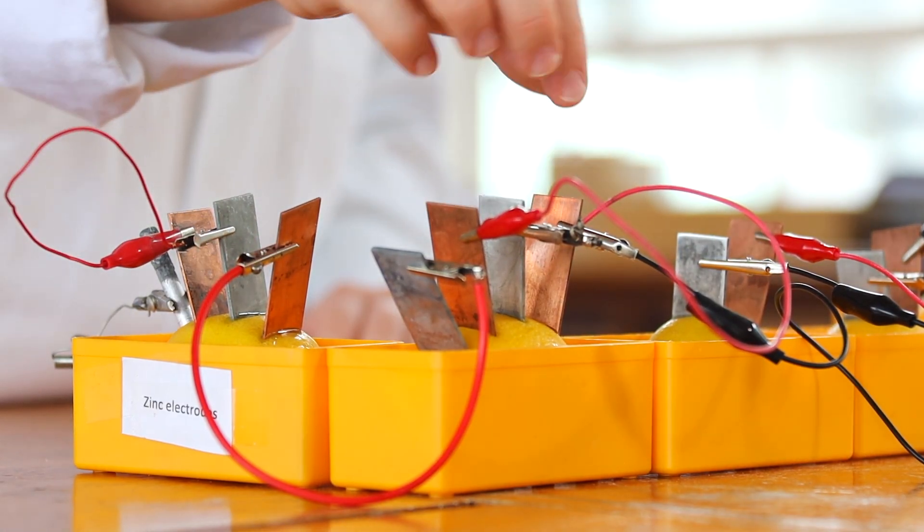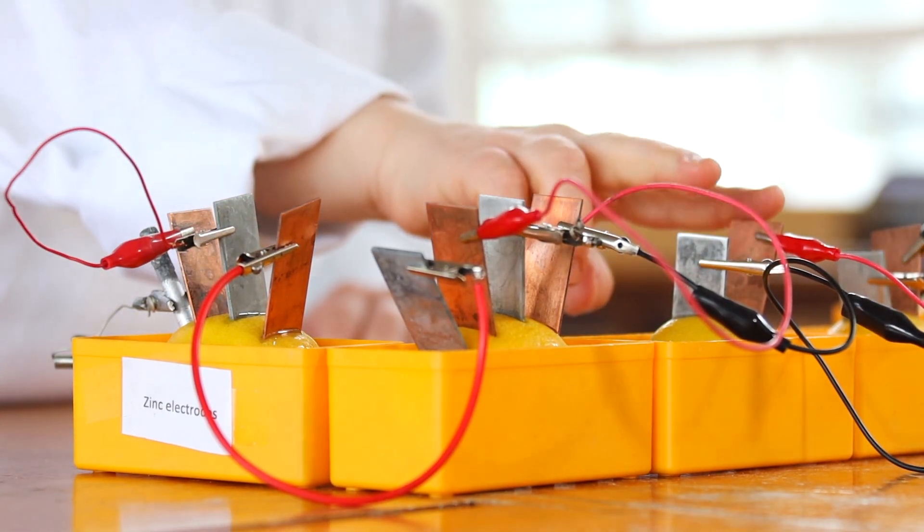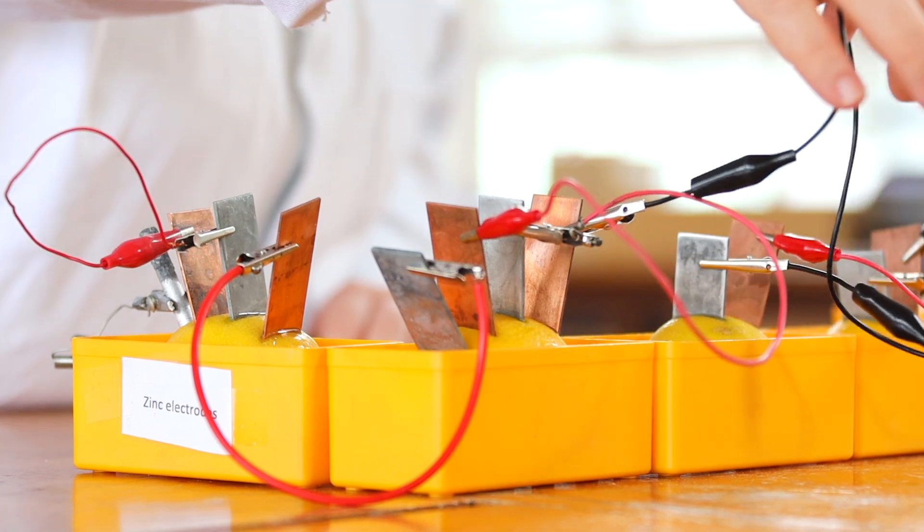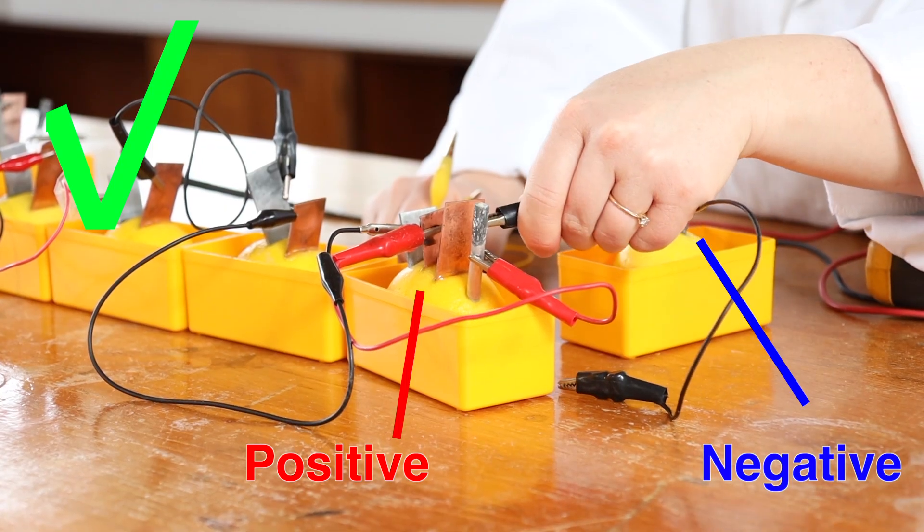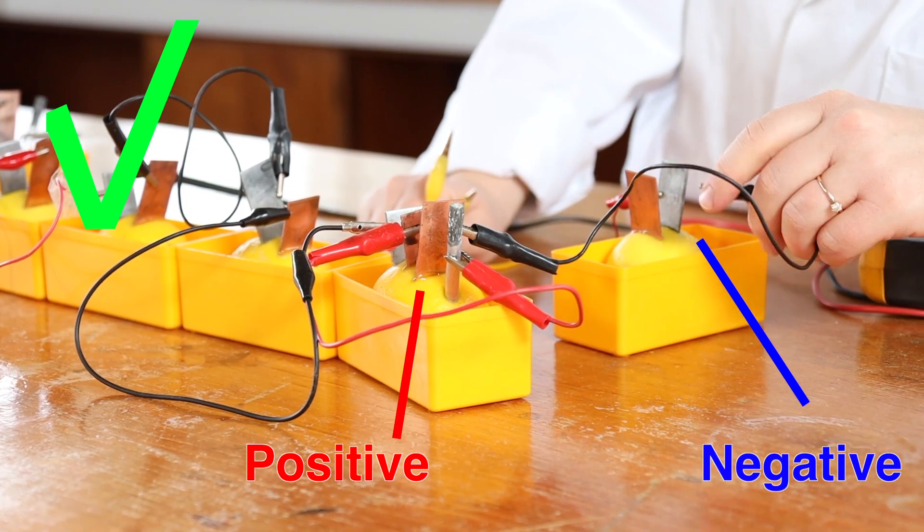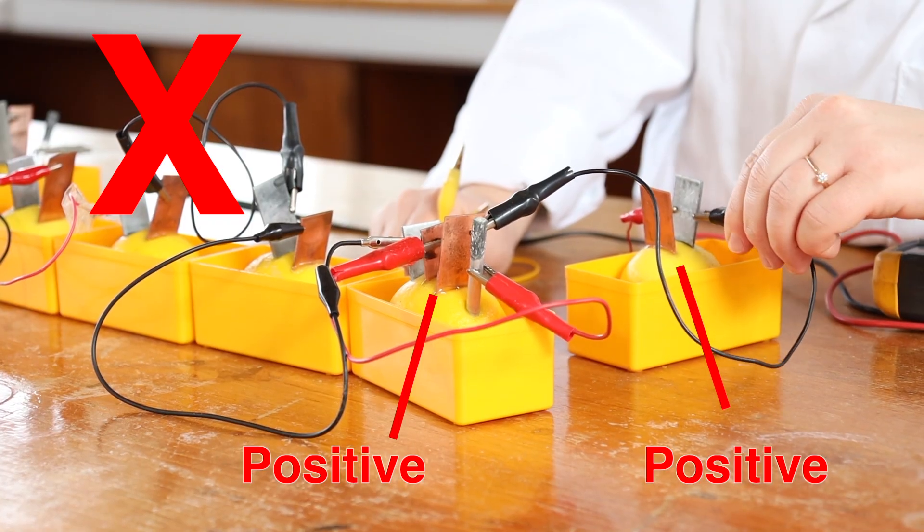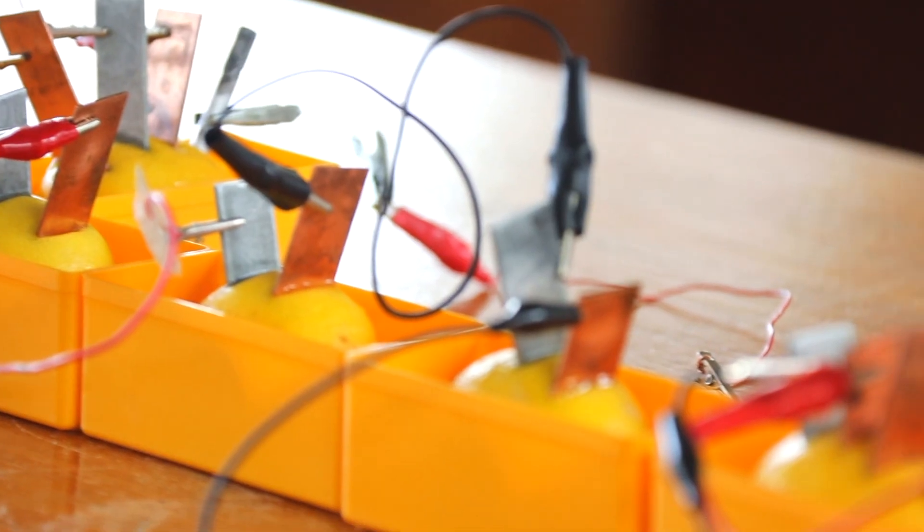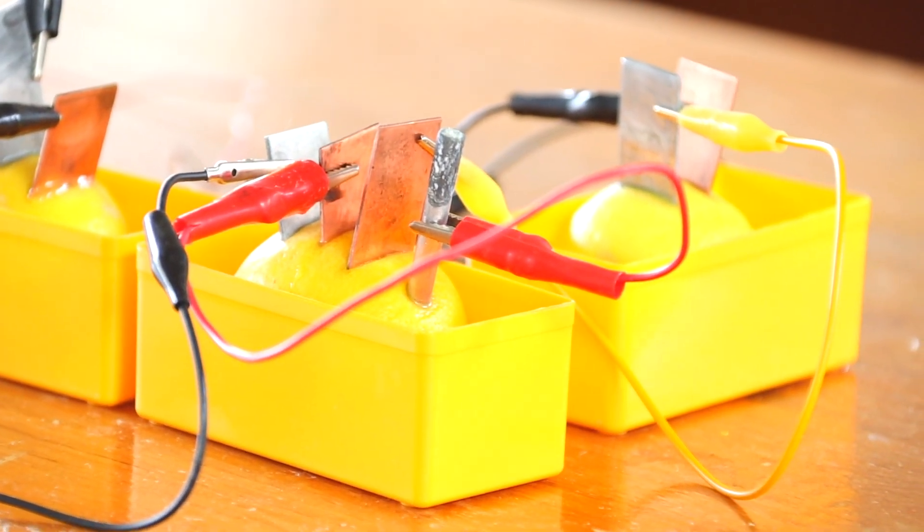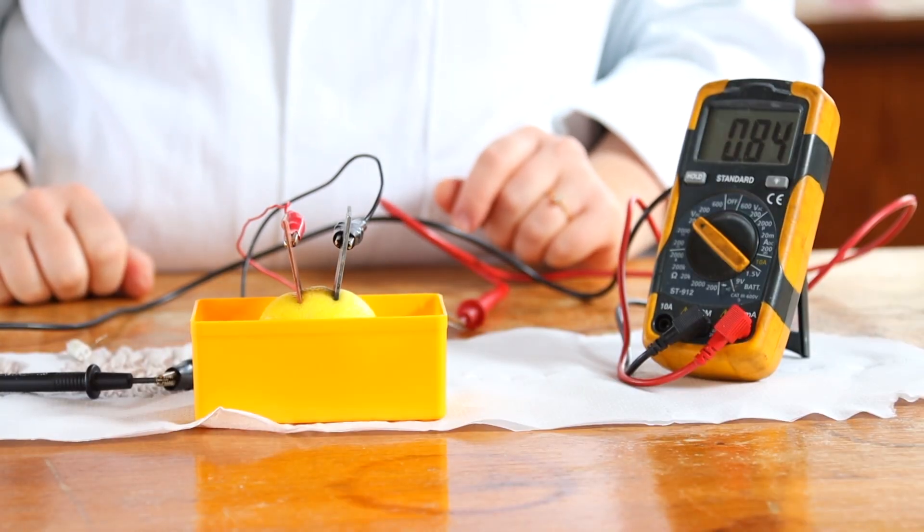With this wire, we connect the second cell to the next cell in the next lemon with this black wire. Make sure that you always connect the positive contact to the negative contact. Otherwise, your batteries won't be connected properly in series and the voltage won't be as high as you expect. When we connect as many lemons as we would like to use, we will get the sum of the voltages of all our cells. We could measure this voltage with our multimeter.